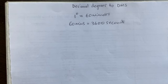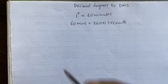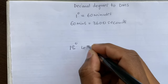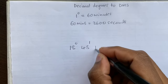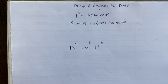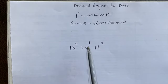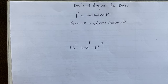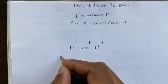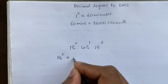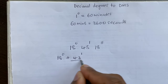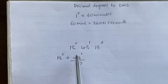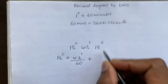This will help you convert from decimal degrees to degrees minutes and seconds, and vice versa. Let's say you are given 18 degrees, 43 minutes, and 18 seconds. You're going to use this rule in order to convert this into decimal degrees. What you need to do is say 18 degrees plus 43 minutes divided by 60, because one degree equals 60 minutes, plus 18 seconds.